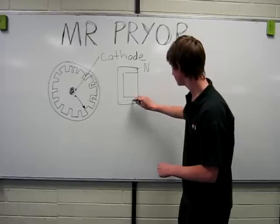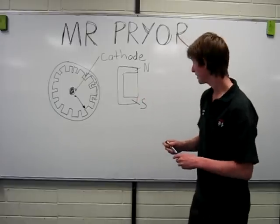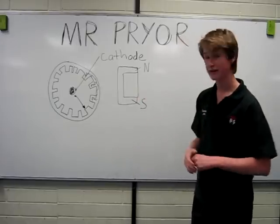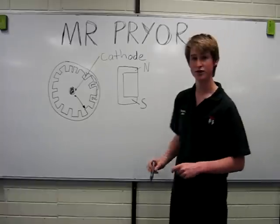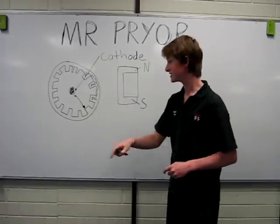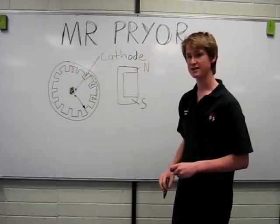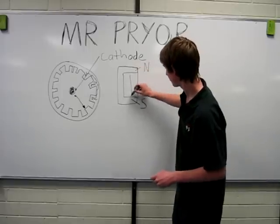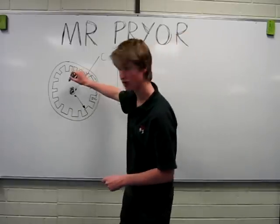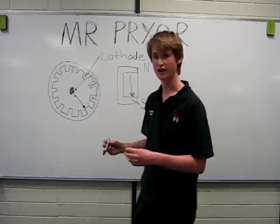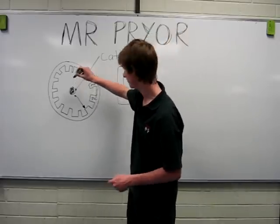North on top, south on the bottom. So this permanent magnet creates a magnetic field running down through the space in the anode vane block. I'll just draw some crosses signifying a magnetic field running down into the board.